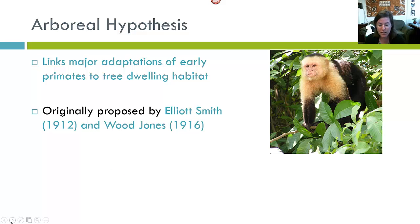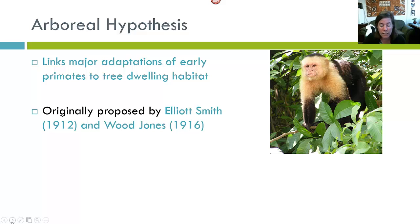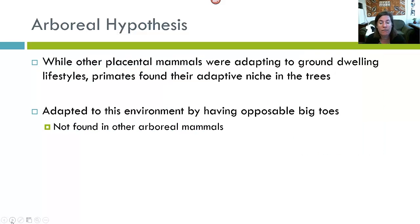The arboreal hypothesis of primate origins links major adaptations of early primates to their tree-dwelling habitat. Basically, because primates are arboreal and up in the trees, they developed adaptations that made them unique from other mammals. This hypothesis was originally proposed by Eliot Smith in 1912 and Wood Jones in 1916. According to this hypothesis, while placental mammals were adapting to a ground-dwelling lifestyle, primates found their adaptive niche in the trees and adapted by having opposable big toes — a characteristic not found in other arboreal mammals.